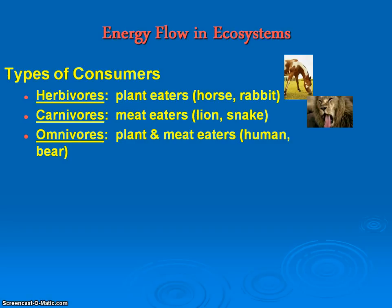Our savannas and deserts are going to have more carnivores. And then omnivores are going to be sprinkled in. Most all of our ecosystems are going to contain omnivores, but some will have more carnivores or herbivores than others, depending on the system.